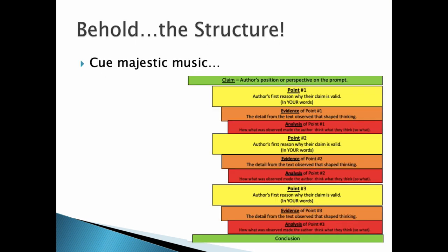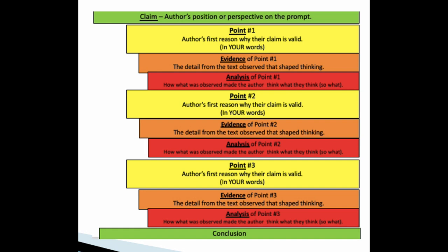So what is that structure? Here it is. We'll go through each color, go through each topic in a little bit more depth. But you can see that we're going to start with a claim, and then we're going to offer three big chunks of why the writer thinks their claim is valid. And then you're going to wrap up the whole paragraph with a concluding sentence.